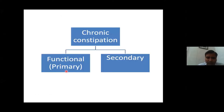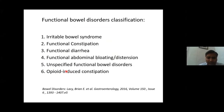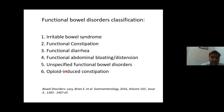Constipation can be primary or secondary. Primary is essentially functional. Based on functional bowel disorder classification, there may be irritable bowel syndrome, functional constipation, functional diarrhea, functional abdominal bloating or distension, unspecified functional bowel disorders, and opioid-induced constipation.